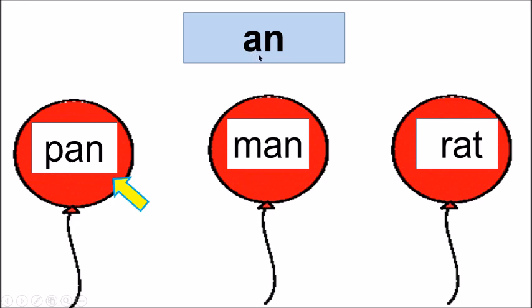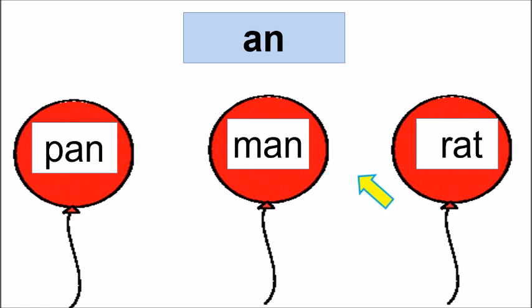We have word family 'AN' here. Now let us look at this yellow arrow and read this word — Pan. Now read this word, children — Man. Now read this word — Rat. Now children, tell me which word does not belong to the AN family.